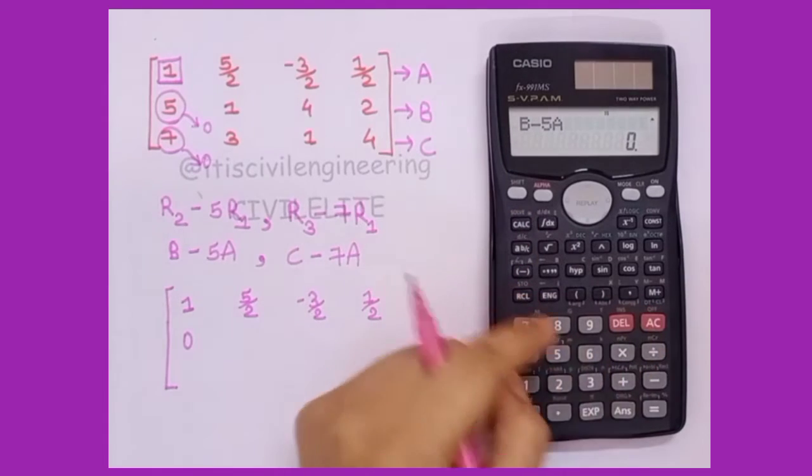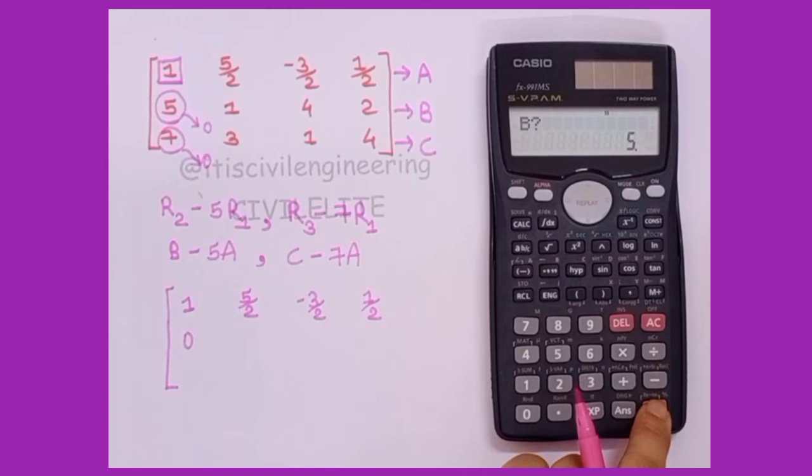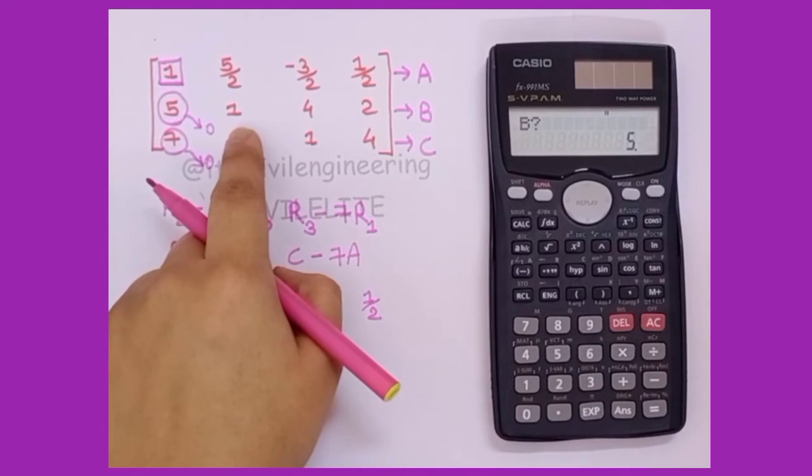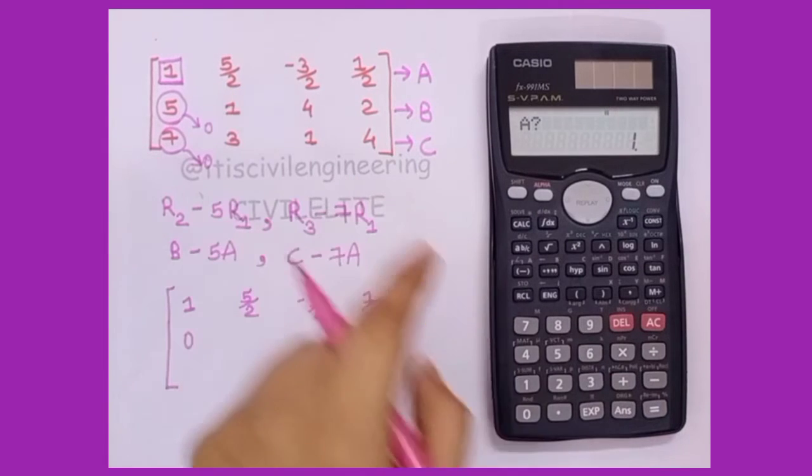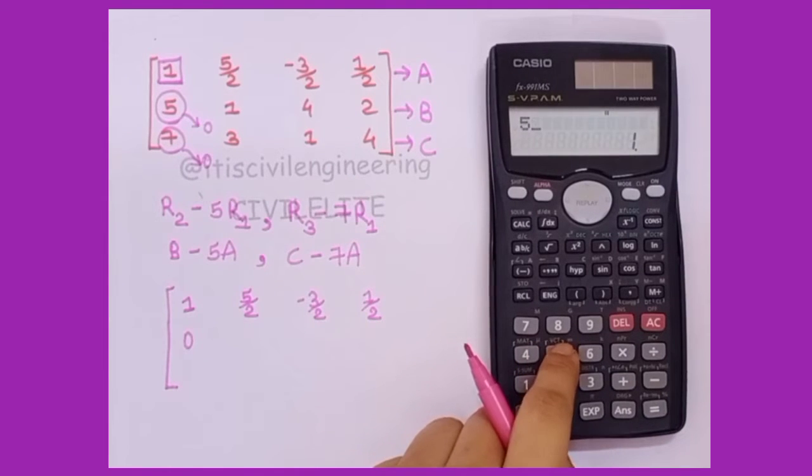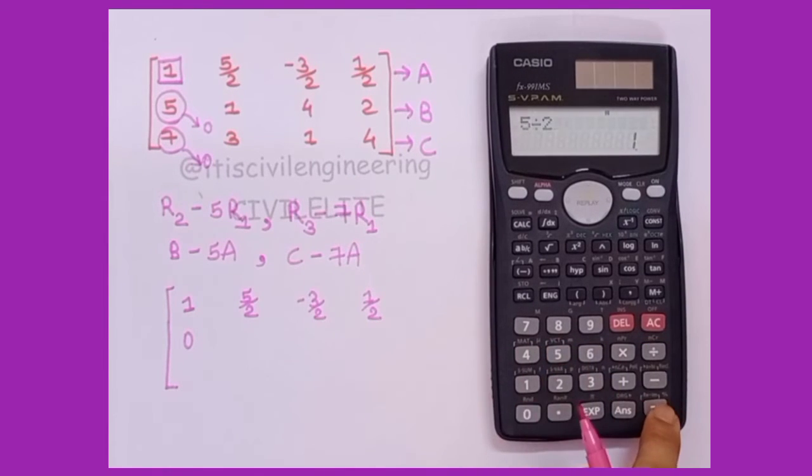Then again, don't press any other key, press equal to. Here we have 1, then a is 5 by 2. 5 divided by 2, again equal to.